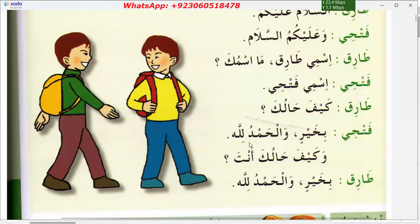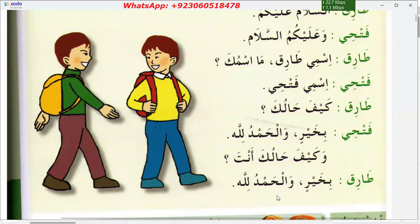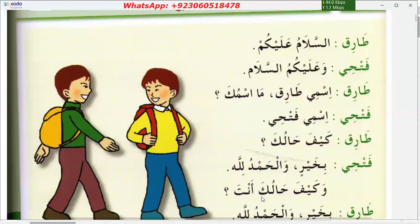'Bi khairin walhamdulillah' means 'I am fine and thanks to Allah.' Then you can ask back: 'Wa kaifa anta?' meaning 'And how are you too?' The reply again is 'Bi khairin walhamdulillah' — I am fine and thanks to Allah.